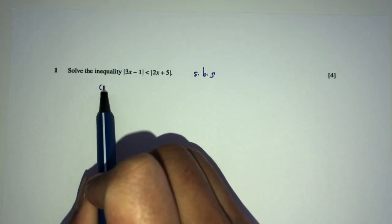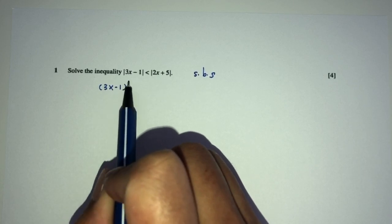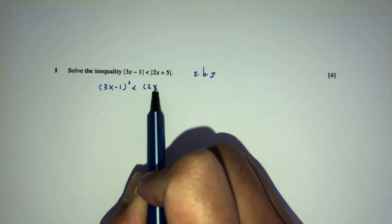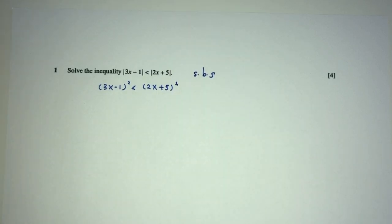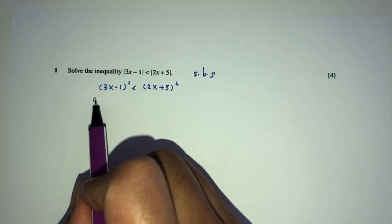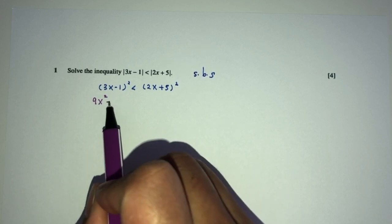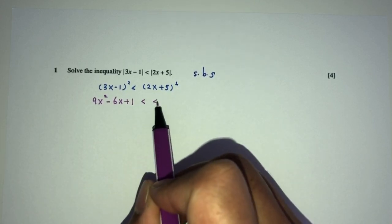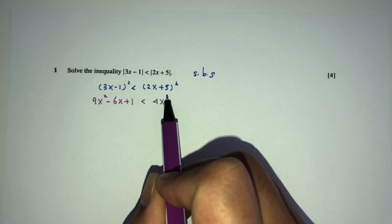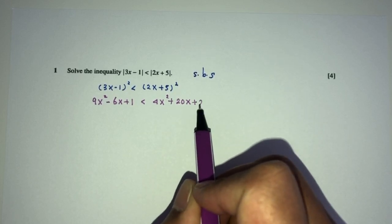So you will have (3x minus 1) squared less than (2x plus 5) squared. Expanding, you will have simply 9x squared minus 6x plus 1, less than 4x squared plus 20x plus 25.